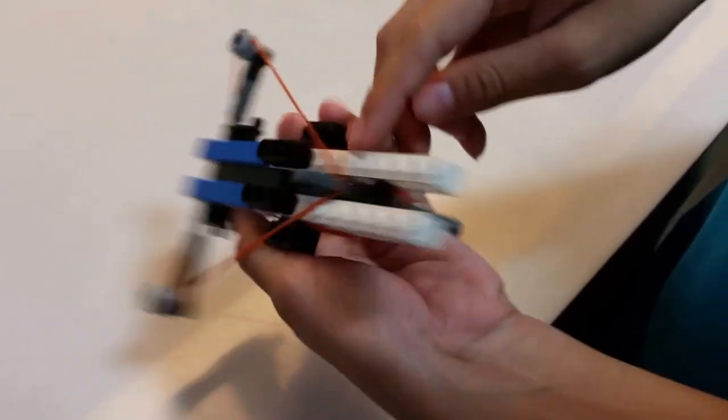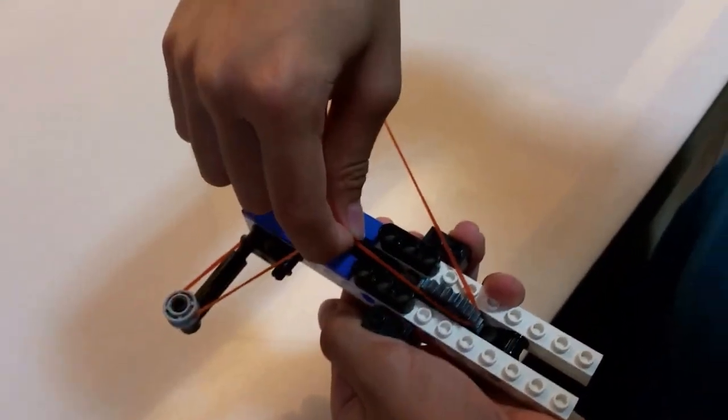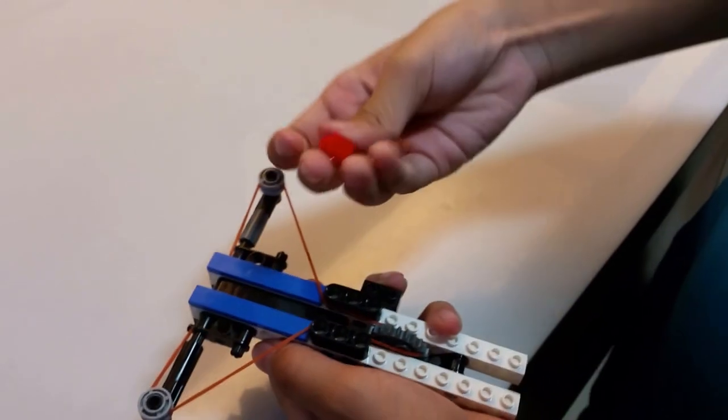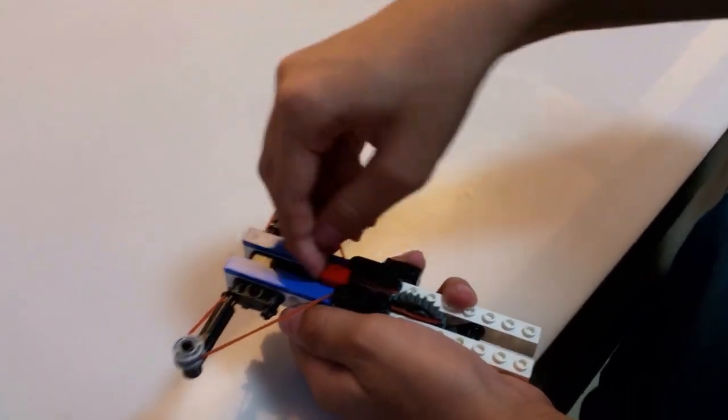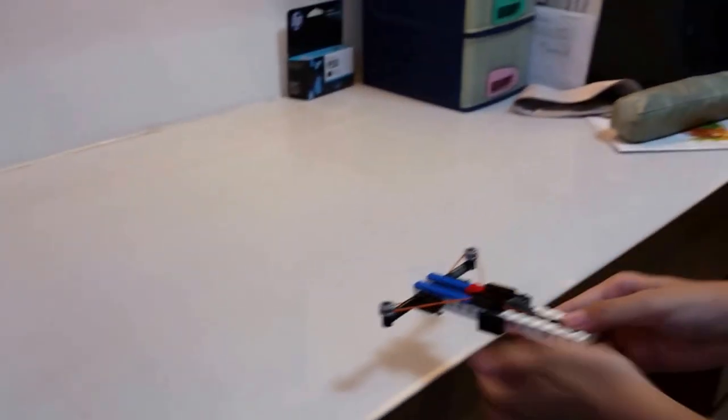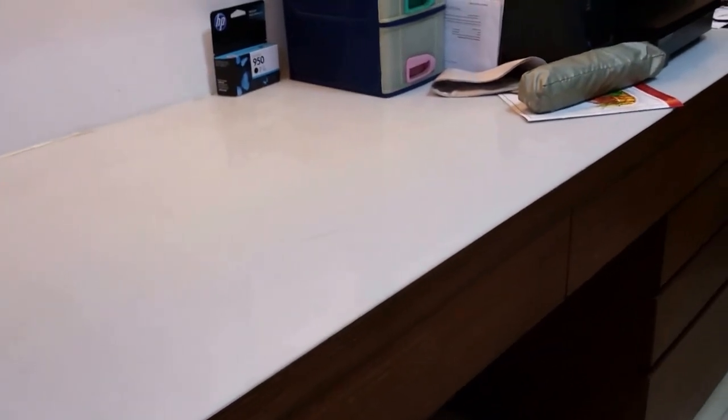To load it, bring it to the back of the gear like this, hook it in, and load your bullet there. Ready, aim, fire! And that's your very own crossbow. Thank you guys for watching and see you again.